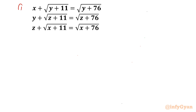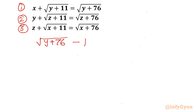I will begin this video by writing equation number 1, 2, and 3. From equation 1, I can write: square root of (y + 76) minus square root of (y + 11) equals x. This is from equation number 1. Now I will rationalize this radical equation.